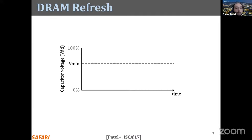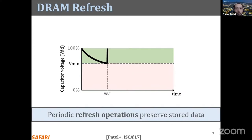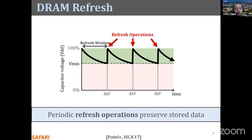The stored data can be corrupted if too much charge leaks. This simplified diagram shows capacitor voltage over time, with a threshold below which we can no longer guarantee correct data reads. As long as the voltage is above this threshold, we can correctly read the cell data — this is a retention success. Once it goes below, we have a retention failure, essentially a bit flip. To prevent retention failures, periodic refresh operations are issued to recharge the capacitor, and the time interval between refresh commands is called the refresh window.